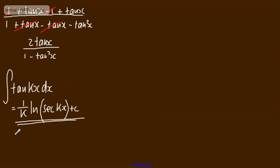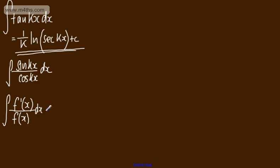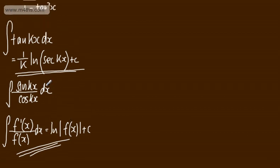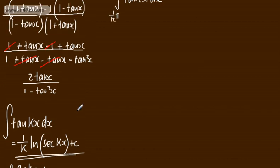You could alternatively write this as the integral of sin(kx) over cos(kx), and recognise that we have a multiple of the derivative of the denominator in the numerator. Using the result that the integral of f'(x) over f(x) dx equals the natural log of |f(x)| plus a constant, either approach works. I'll use the standard result as it's slightly more direct.